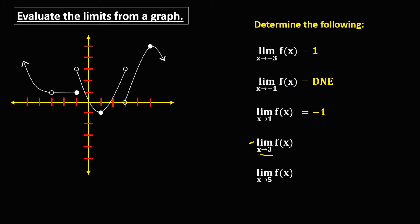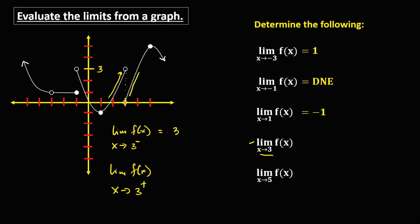Then for the limit of f of x as x approaches positive 3 from the left, the limit is positive 3. And the limit of f of x as x approaches positive 3 from the right, the limit is equal to 0. Since the left side limit is not equal to the right side limit, the limit of f of x as x approaches positive 3 does not exist.